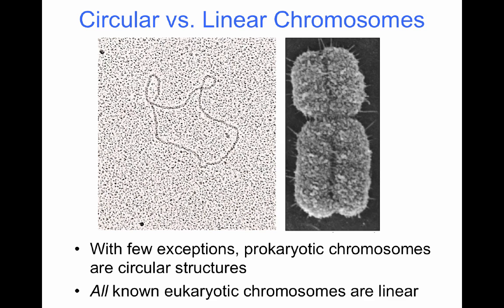Eukaryotes have chromosomes that are linear, and as you can see from this image during mitotic compaction, the chromosome is condensed to allow it to be separated into two daughter cells. On the other hand, on the left, you can appreciate a prokaryotic chromosome, which is completely circular.